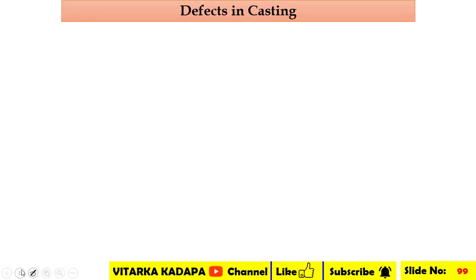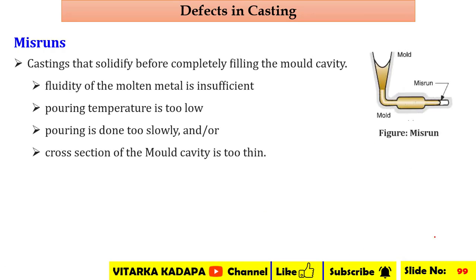Defects in casting: after the solidification process, the cast part will definitely consist of some defects. Among the first one is misruns. In this particular mold, you can see some white space — this white space is called a misrun, where the molten metal does not completely solidify and leaves some space.